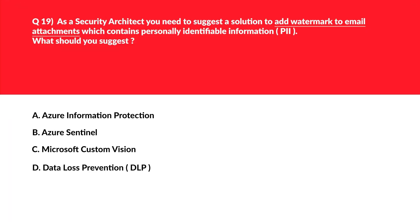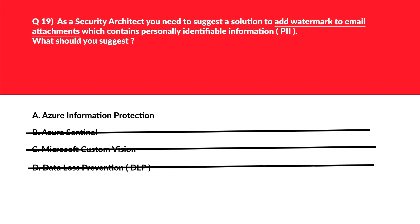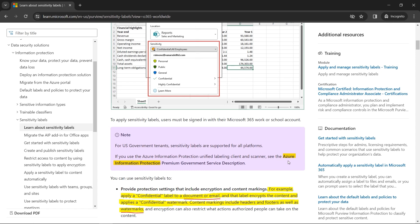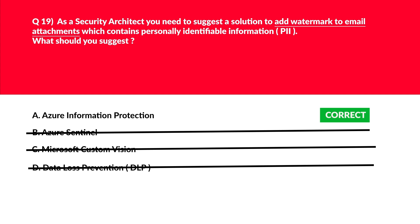Next question: keyword is 'add watermark to email attachment.' Whenever you see keywords like adding watermarks to emails or documents, think Microsoft Information Protection, also known as Azure Information Protection. The documentation states Azure Information Protection can apply a confidential label to a document or email, encrypting the content and applying content markings including headers, footers, and watermarks. Lock option A, Azure Information Protection, as the correct answer.